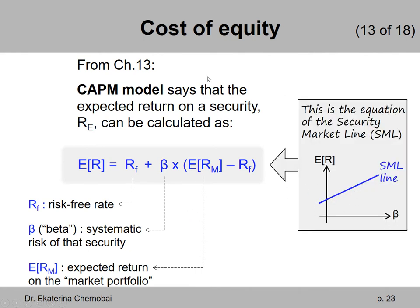Just to remind you what the CAPM model was about: it describes the relationship between systematic risk and return for any financial security. Essentially, high risk means high return — the higher the risk, the higher the return. The Security Market Line illustrates this positive relationship between risk and return. That's what the CAPM model was all about.